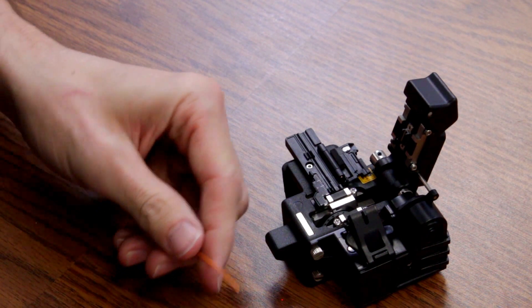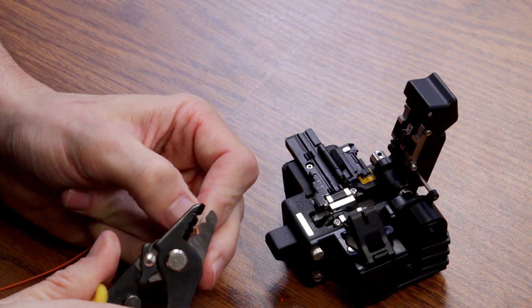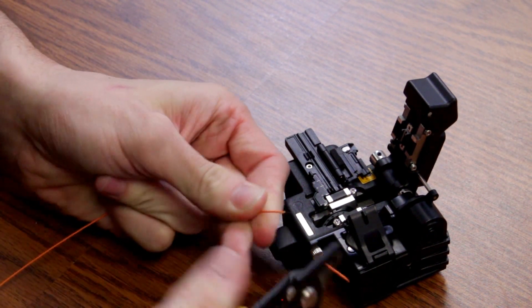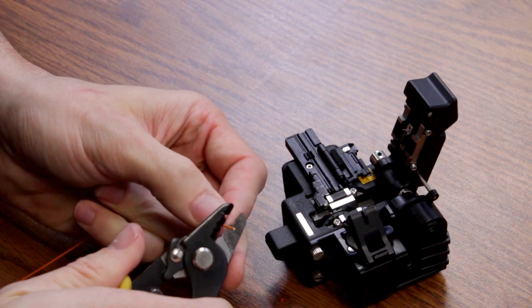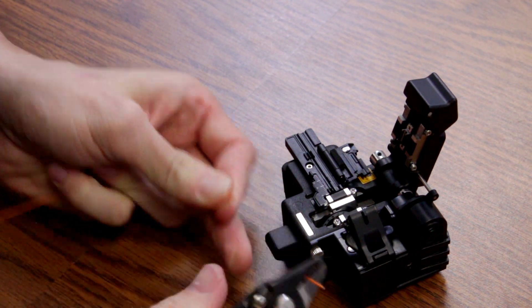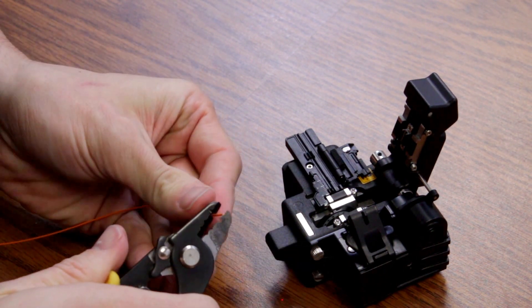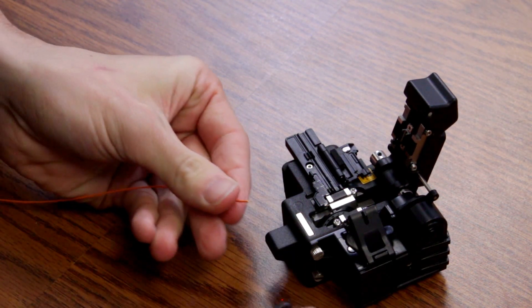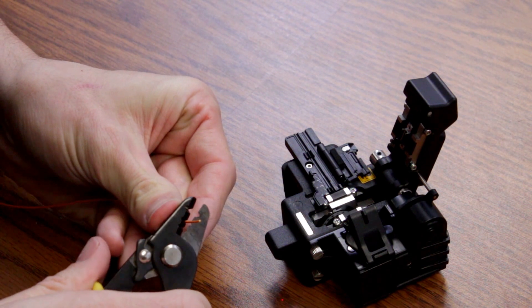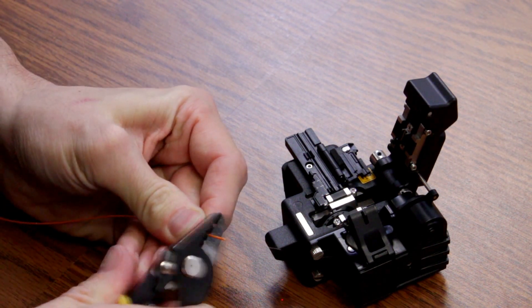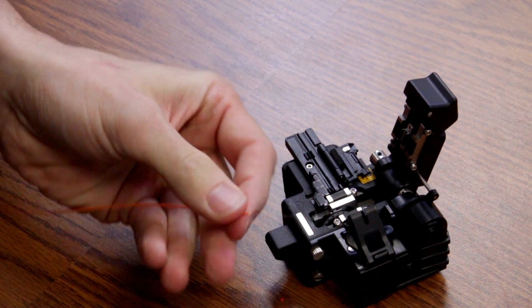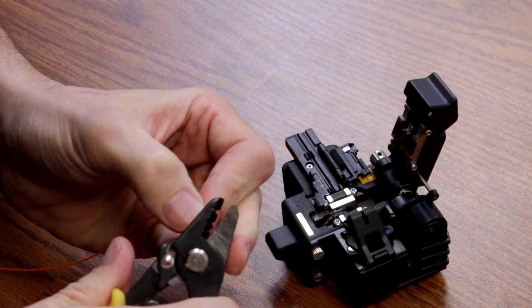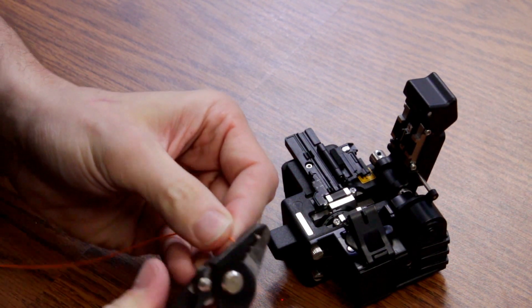So the first thing I'm going to do is take a three-hole stripper and strip back the fiber. Once I have enough of that, I'm going to take off a little bit of the clear cleave at a time.